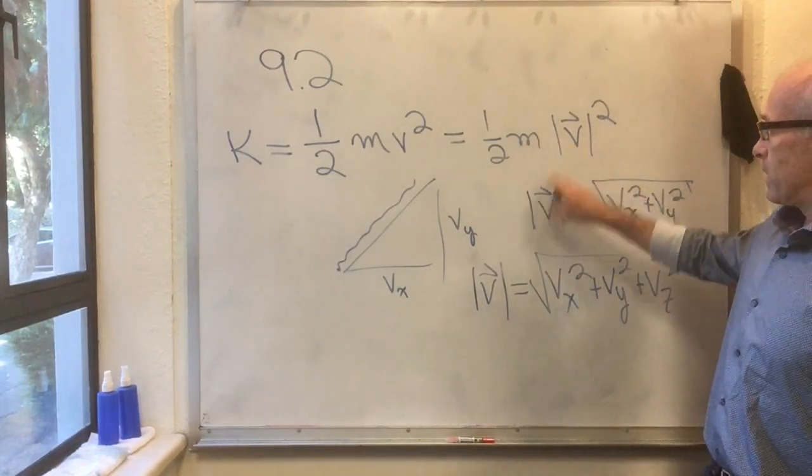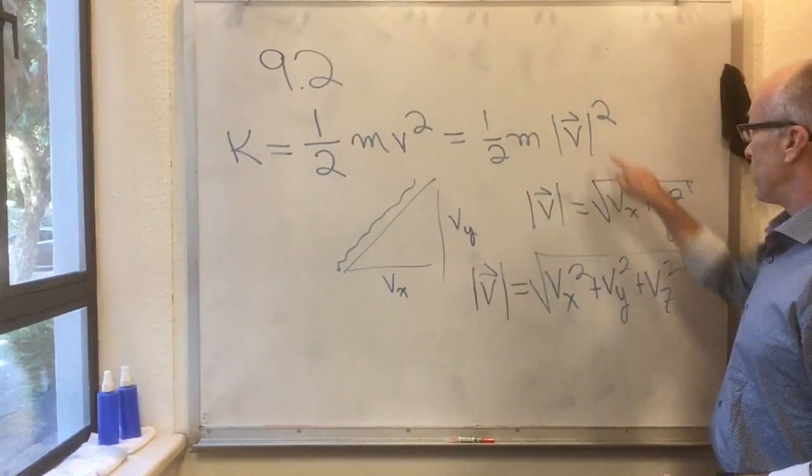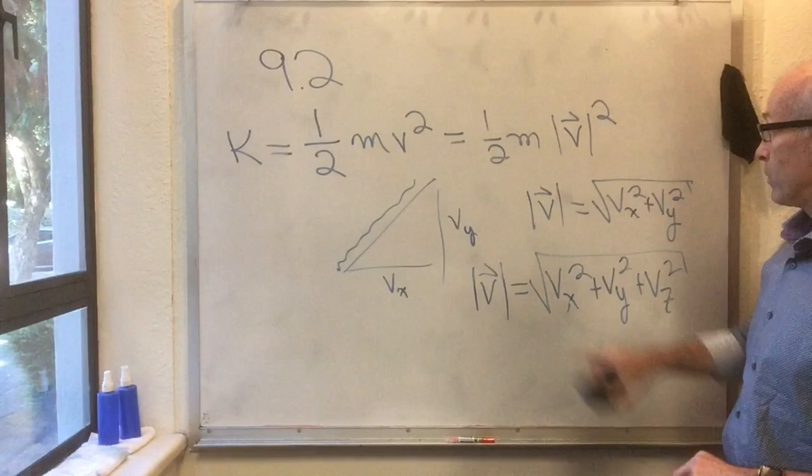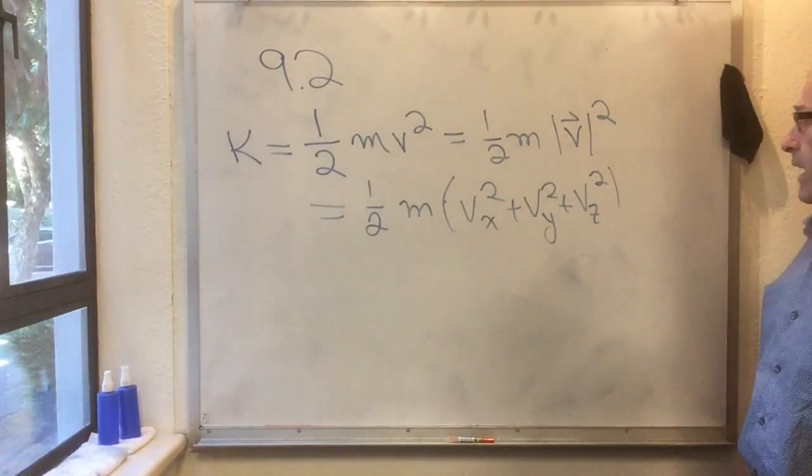So this thing up here, since it has V squared in it, and this is an expression that has the square root, but the squared is going to cancel the square root, this thing up here simplifies. So K equals one-half m times Vx squared plus Vy squared plus Vz squared.